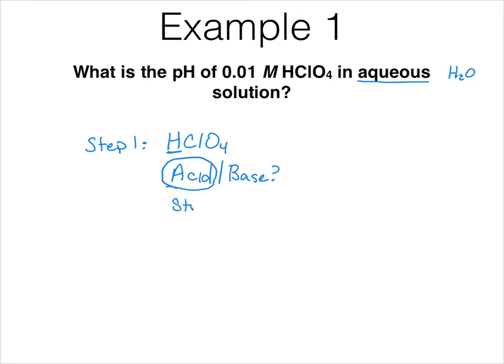The next question we have to ask, is it a strong acid or is it a weak acid? Now, HClO4 is one of the six strong acids that we have to memorize. If you don't know this list, go back to the first video of this series. So we now know that HClO4 is a strong acid.